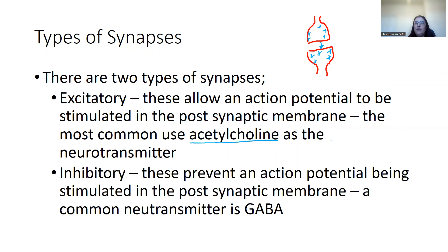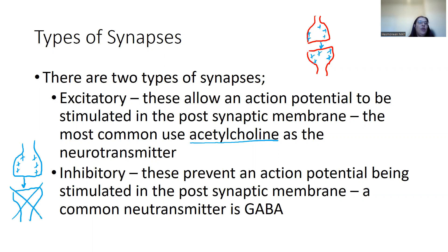The second type of synapse is an inhibitory synapse. When an action potential arrives at the presynaptic neuron, a neurotransmitter will be released, but no action potential will form in the postsynaptic neuron — it inhibits it. The common neurotransmitter here is GABA, which, although not specifically mentioned on the specification, often comes up in exam questions.